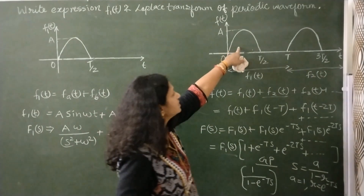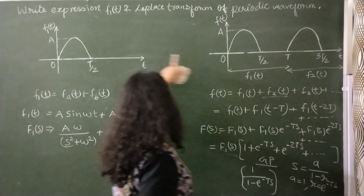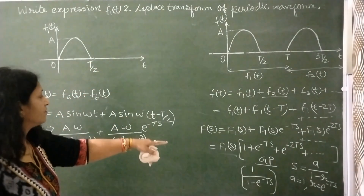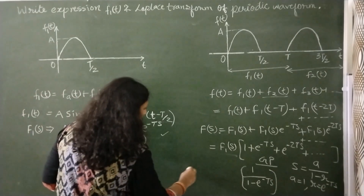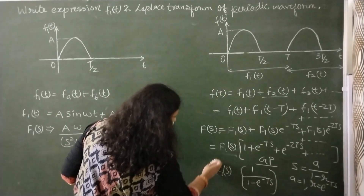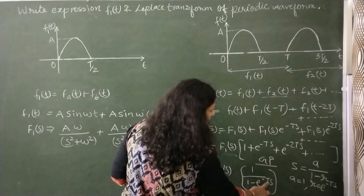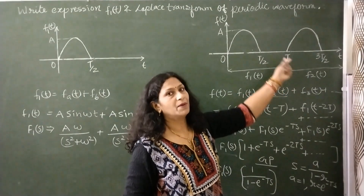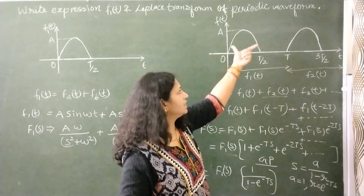F1(S) is the Laplace transform of the waveform over the time period 0 to T, which we already derived. So the final expression is F1(S) × 1/(1 − e^(−TS)), where T is the time period after which the component repeats itself.